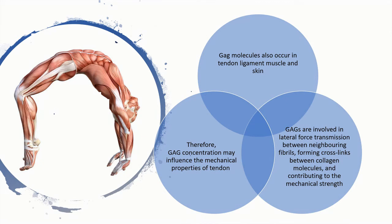GAG molecules aren't only found in cartilage. They're also found in other soft tissues as well, such as tendon, ligament, muscle, and skin. They also appear to affect the mechanical properties of tendons. They're certainly involved in the ability of a tendon to transmit lateral force between adjacent fibrils. And they form cross-links between the collagen molecules and give the tendon additional strength. So if we lose these tissues through immobility or inactivity, the strength of the tissue will be decreased. Another reason why active movement and exercise are important.